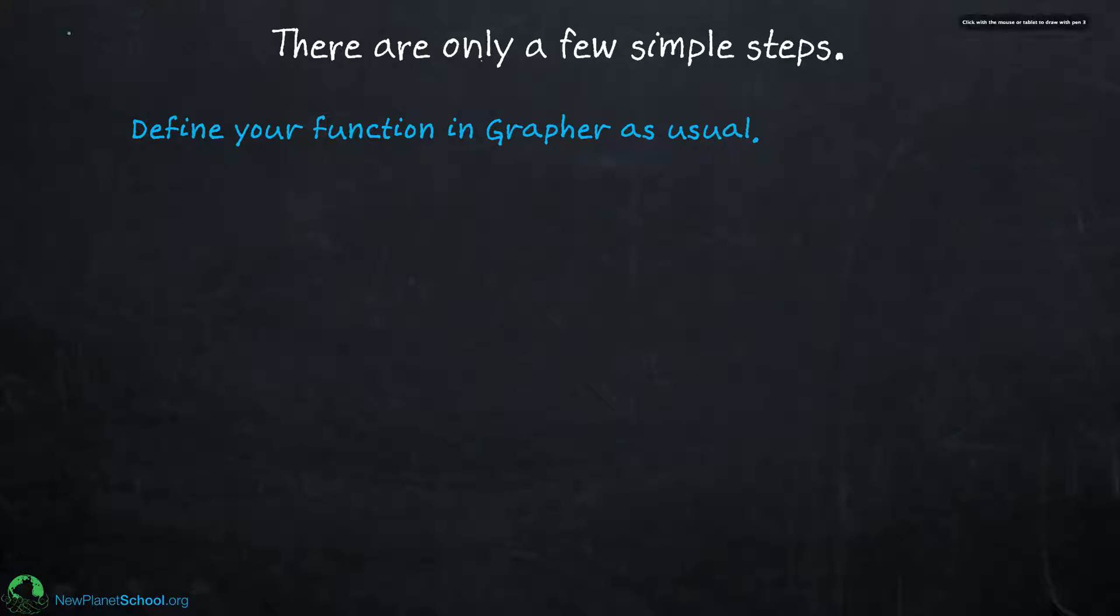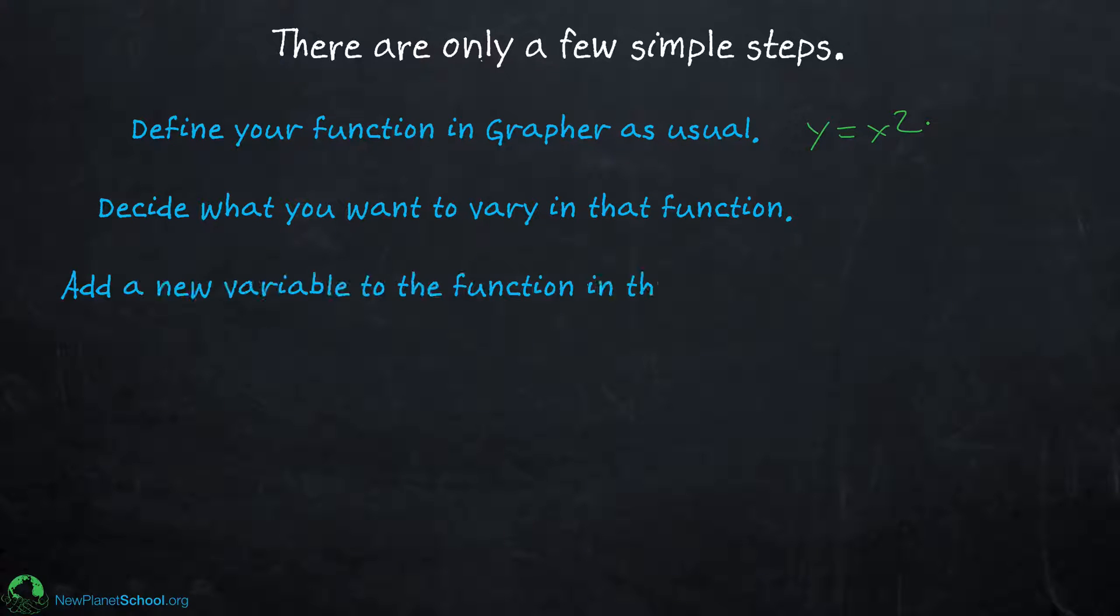The first thing is you're going to define your function. You're going to have some function like you normally do, say y equals x squared, and you want to vary something about that. So decide what it is that you want to vary, then add that new variable in the right spot. So retype your function with your parameter. Let's say I call my parameter a, so ax squared, and that's the thing I want to vary. I type that in and it won't work, so you'll get kind of an error but that's okay.